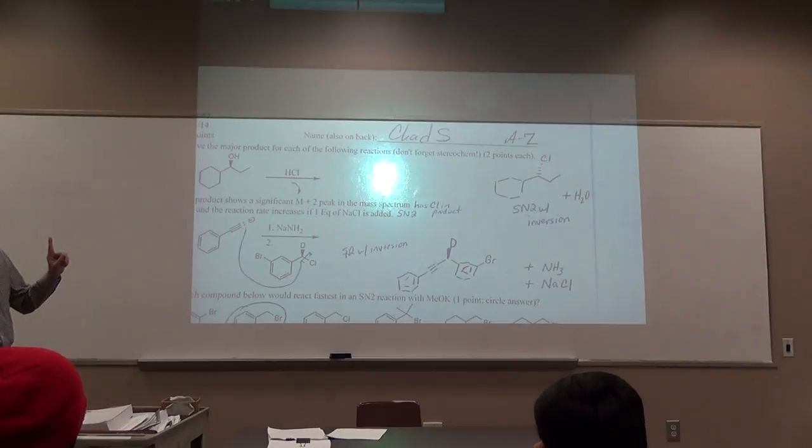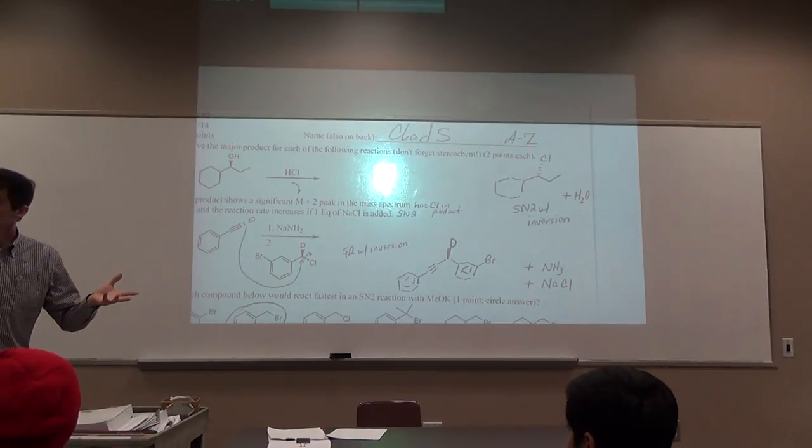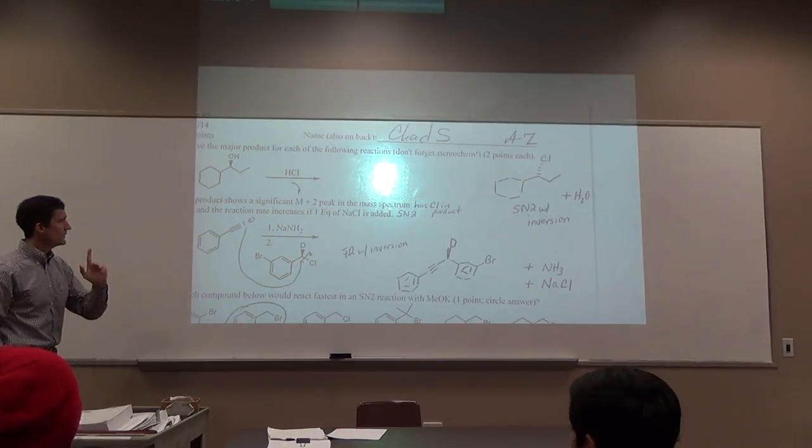Same thing with elimination. This could do an elimination. It's hard to know if that would be E1 or E2. Is chloride a strong base? What was our definition of strong bases? Anions or SP3 nitrogens? Chloride is the conjugate base of HCl. HCl is a strong acid. That means the conjugate base is weak. Chloride is not really that strong of a base. If it did elimination, I'd probably say it's more likely to be E1.